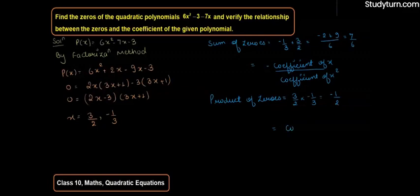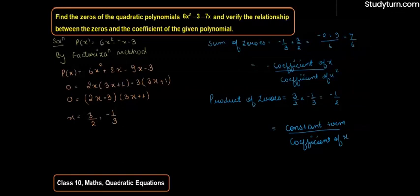So constant term upon coefficient of x² — अगर आप polynomial में देखेंगे तो यह equal हो जाएगा -3/6 = -1/2. Hence यह proof कर दिया। Thanks for watching the video, please subscribe to our YouTube channel.